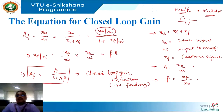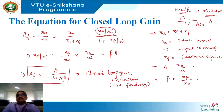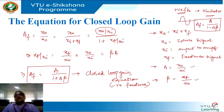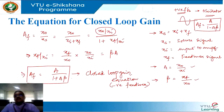Negative feedback is used to design an amplifier. In case of positive feedback, the equation for Af changes from A divided by 1 plus Aβ to A divided by 1 minus Aβ — that is the only change you observe in the equation for positive feedback.